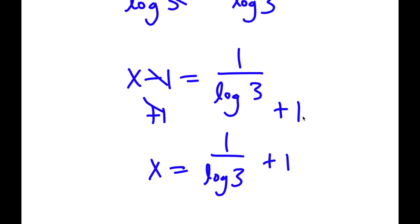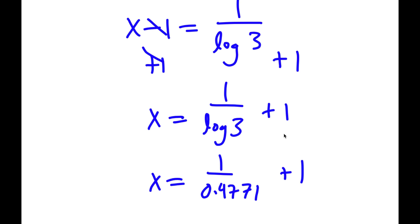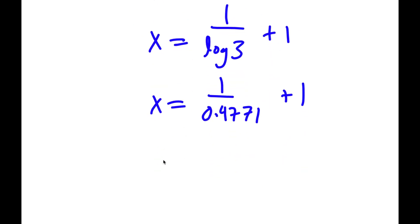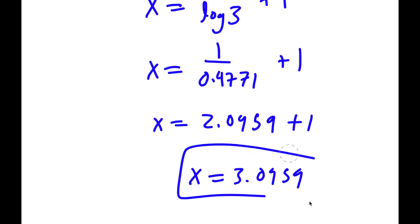To find the exact value, I can plug log 3 into a calculator — log 3 equals 0.4771. So I have 1 over 0.4771 plus 1. Now, 1 over 0.4771 equals 2.0959. So I have 2.0959 plus 1, and my final answer is 3.0959.